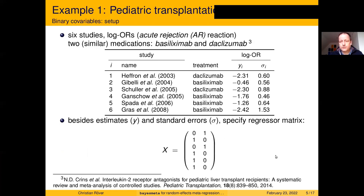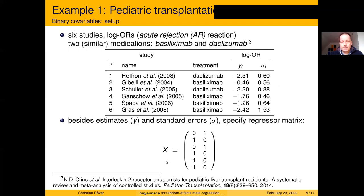Here's an example including six studies with estimates of a log odds ratio along with standard errors. We also have a treatment co-variable: six studies based on two different treatments — daclizumab and basiliximab. To estimate two individual means for these treatments, we code this information into a regressor matrix X with two columns for the two parameters and six rows for the six studies, with zeros and ones indicating which study belongs to which treatment group.